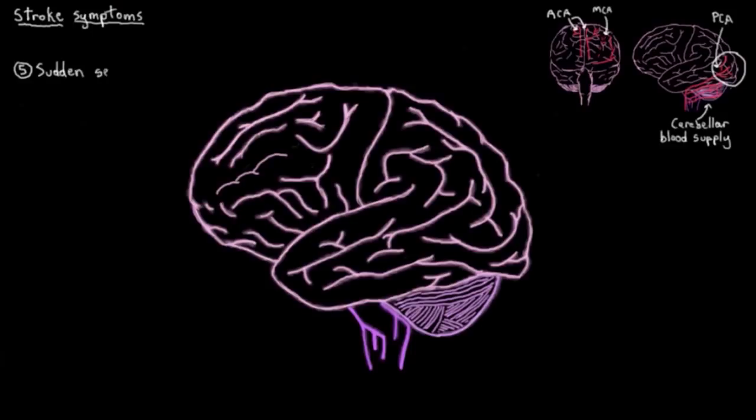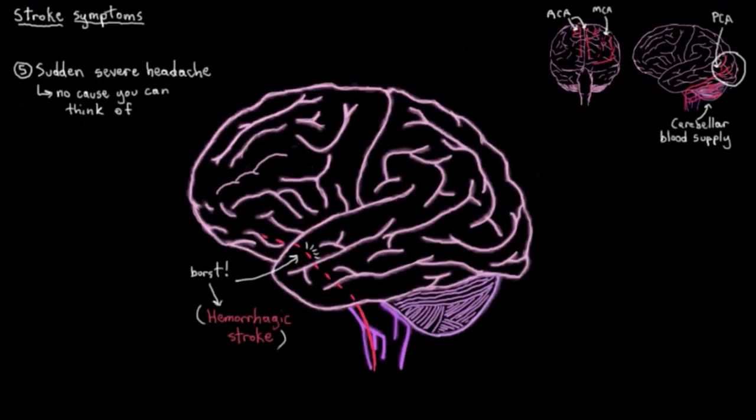Okay, so the last symptom I'll cover is just a sudden severe headache with no known cause. So you might remember that there's a subtype of stroke called a hemorrhagic stroke, which is where a blood vessel in the brain actually bursts and causes a stroke by loss of blood from the cerebral circulation. Well, this is probably not so surprising, but when a blood vessel bursts in your head, it hurts a lot. So you get a sudden severe headache with no explanation. So there you go. Those were five of the most common stroke signs and symptoms.